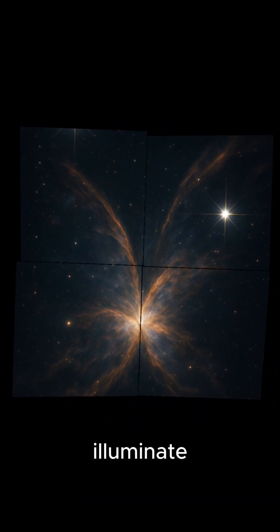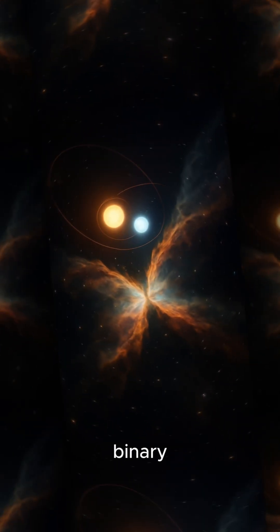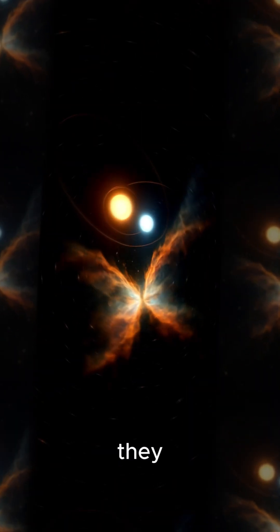The most prominent stars that illuminate the nebula are Gamma and Delta Serpentis. These two stars are part of a binary system, meaning they orbit each other.